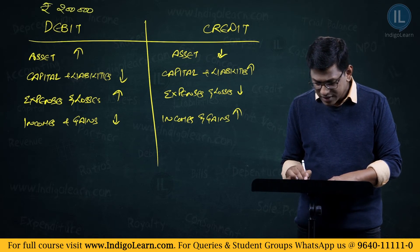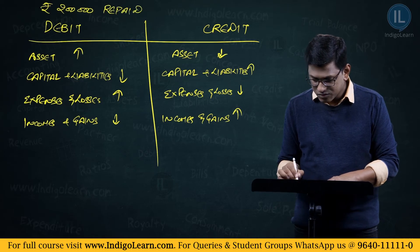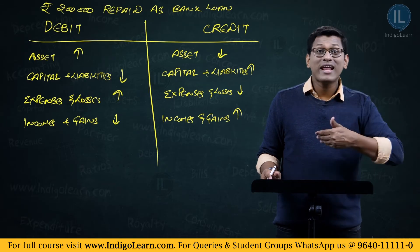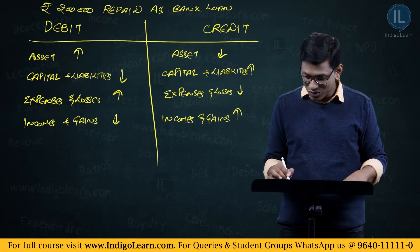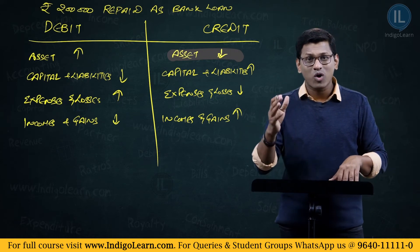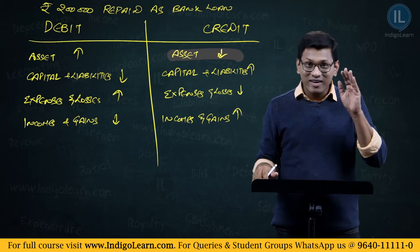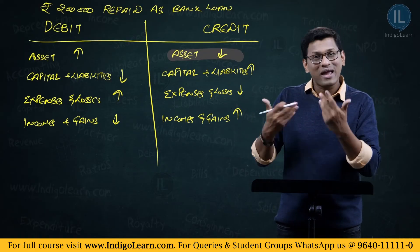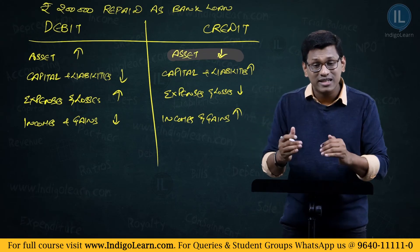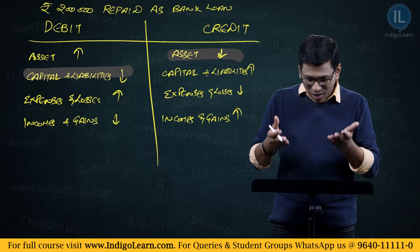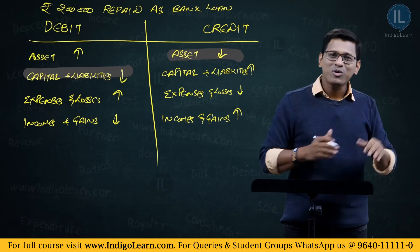Rupees 2 lakhs repaid as bank loan. 2 lakhs went out — an asset is going out — so credit side is clear: asset is decreasing. Now what is happening to the loan? 2 lakhs is repaid, so that amount of loan will come down. Loan is a liability — liability is coming down. So debit side: capital or liability coming down. Credit side: asset going down. That is the journal entry.